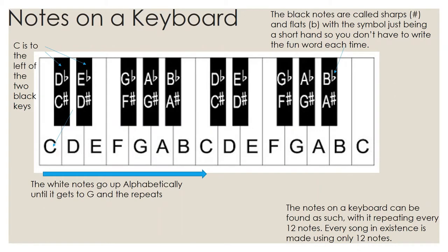Notes on a keyboard. You've seen this all before, but I'm just going to go through a quick overview. As you know, the white notes go up alphabetically. So if you start at C, the next note after that would be D, then E, then F, then G. But then it does not go to H. There's no such thing as H. It repeats back to A, then goes B, and then you're back at C. So it only ever goes from A to G and then it just keeps repeating.